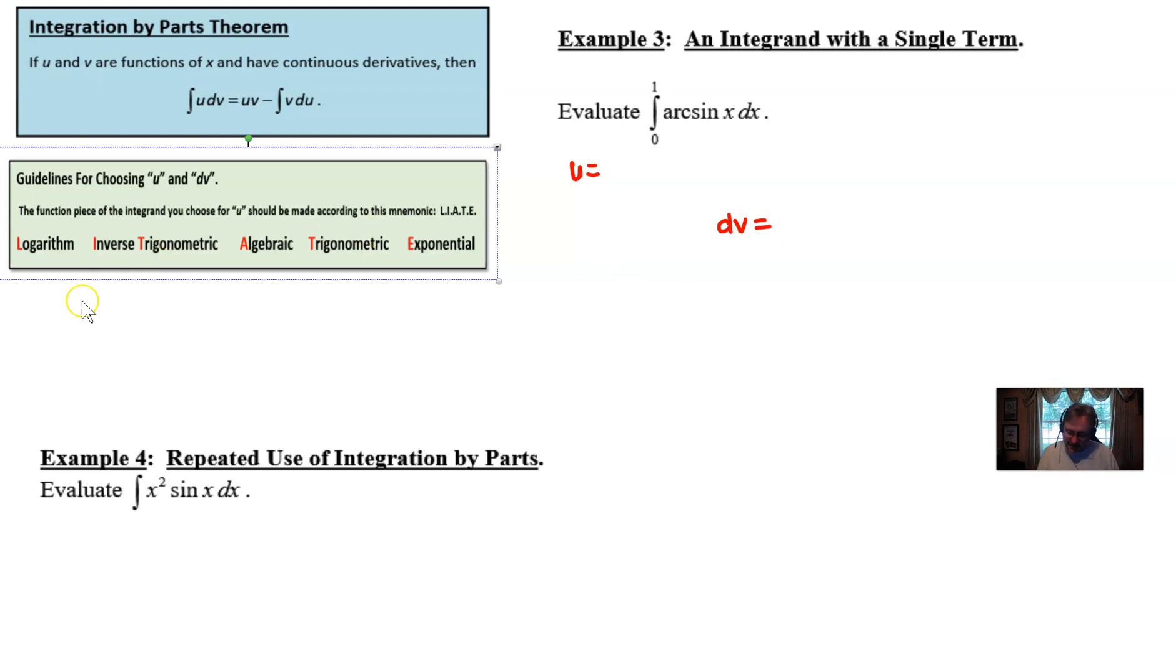So in this particular problem we structure our u and our dv. We go through the chart and we see, well we don't see a logarithm in this problem so we move to the next value which is inverse trig which boom we've got one of those for sure. So we're going to place our arc sine right here. Well what does that leave to be dv? A lot of times people think you can't have a situation where u eats up your entire integrand. But there is that little piece that's left called the dx, the differential, and it's perfectly acceptable to on occasion let that be your dv.